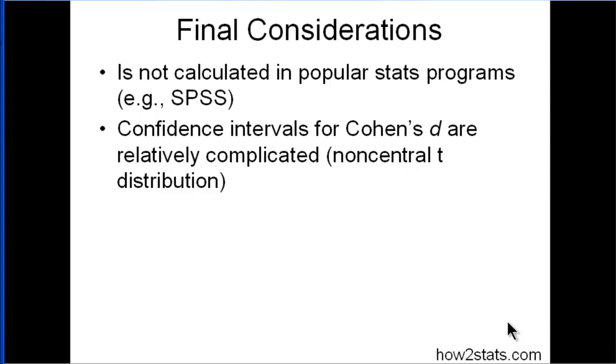Confidence intervals for Cohen's D are actually fairly complicated because you have to use a non-central T distribution, as argued by some people that have been published in reputable journals. So it's not as simple as simply getting the standard error of estimate from the T or using a corresponding T confidence interval. It's a little more complicated than that.